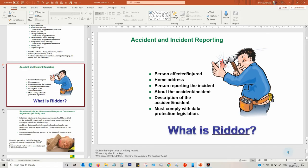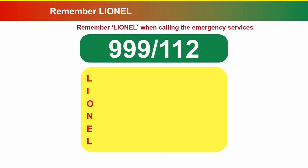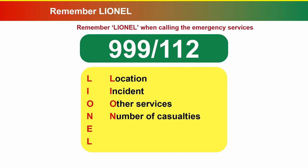Number five is action in an emergency. Remember the acronym LINEL when calling the emergency services. You can use 999 or 112. You need to remember the Location — be specific and give postcodes if you can. Tell them what the Incident is all about. Note any other services you might require — it might be police, fire engine and ambulance, or just one or two. The Number of casualties, the Extent of injuries, and repeat the Location again, being very specific about it.